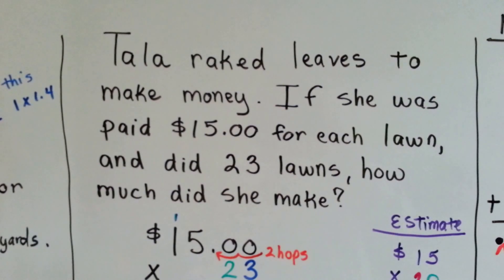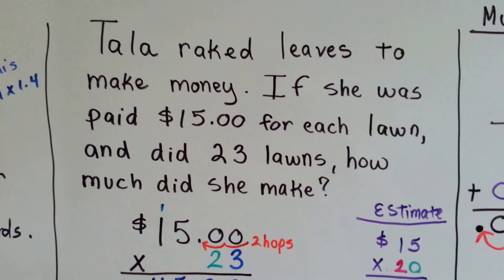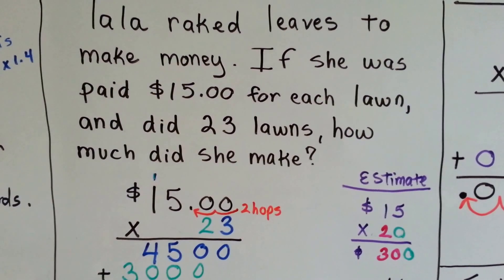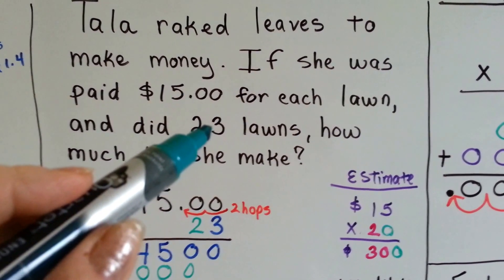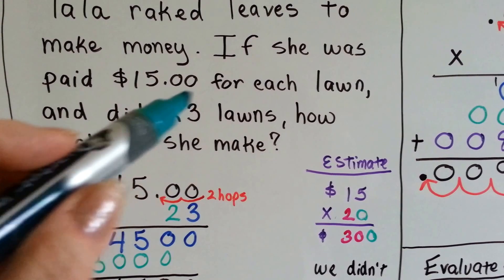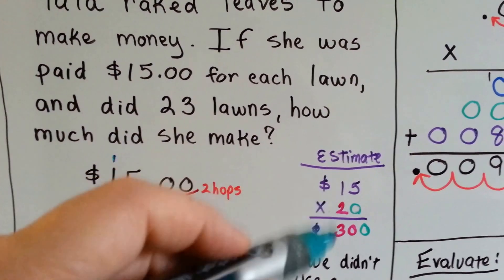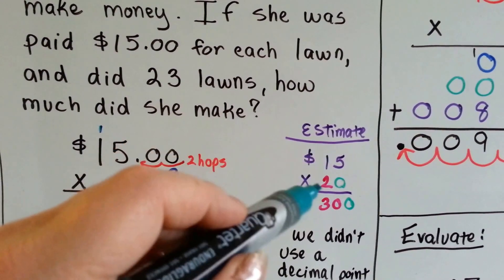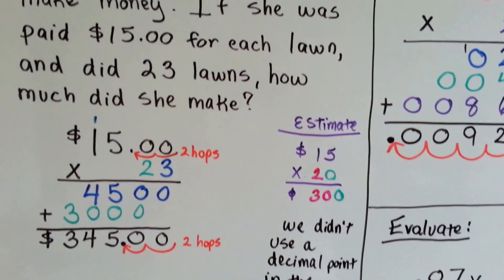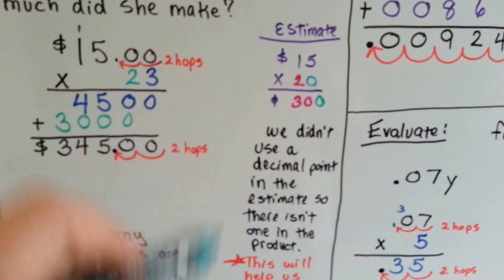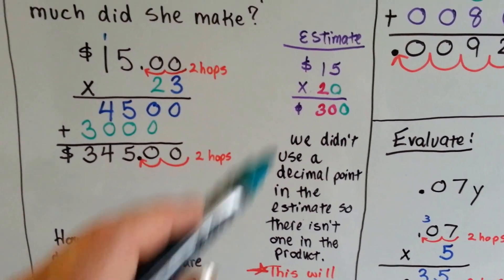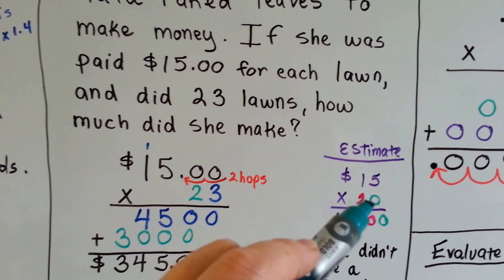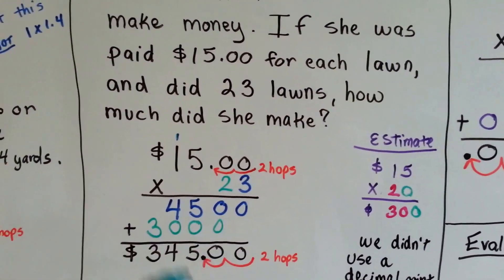Now let's talk about Tala. If she raked leaves to make money and she was paid $15 for each lawn and did 23 lawns, how much did she make? We can round 23 to 20 and just do 15 times 20 to get a quick estimate — do 2 times 15 and add a zero on the back end because we're multiplying tens. So it would be about $300. We didn't use a decimal point in the estimate, so there isn't one in the product. This will help us check our answer — we know it should be around $300, maybe a little more because it should have been 23.